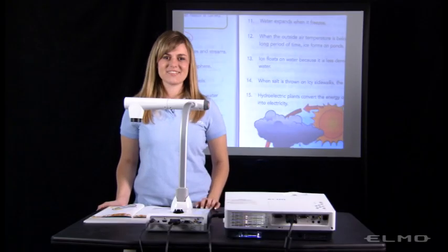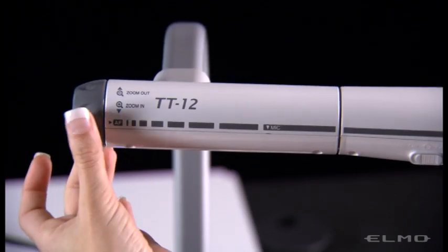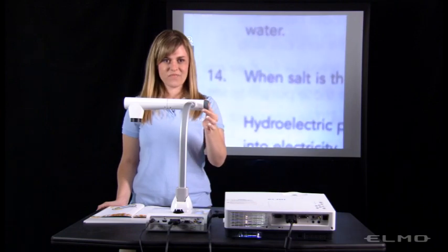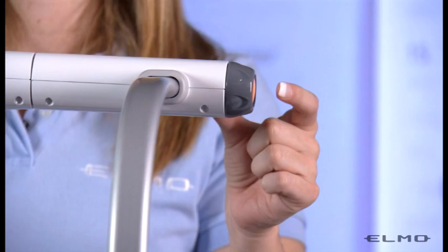Now we are ready to use the TT12. You can zoom in and out by using the zoom dial here on the side of the camera. Press the orange button in the center to focus the image.